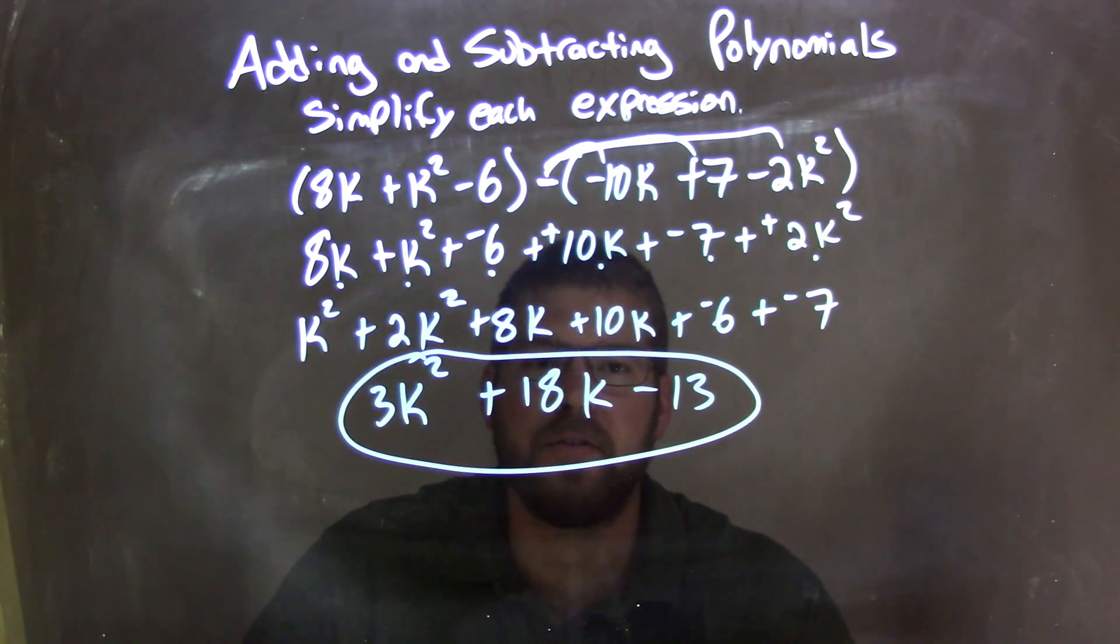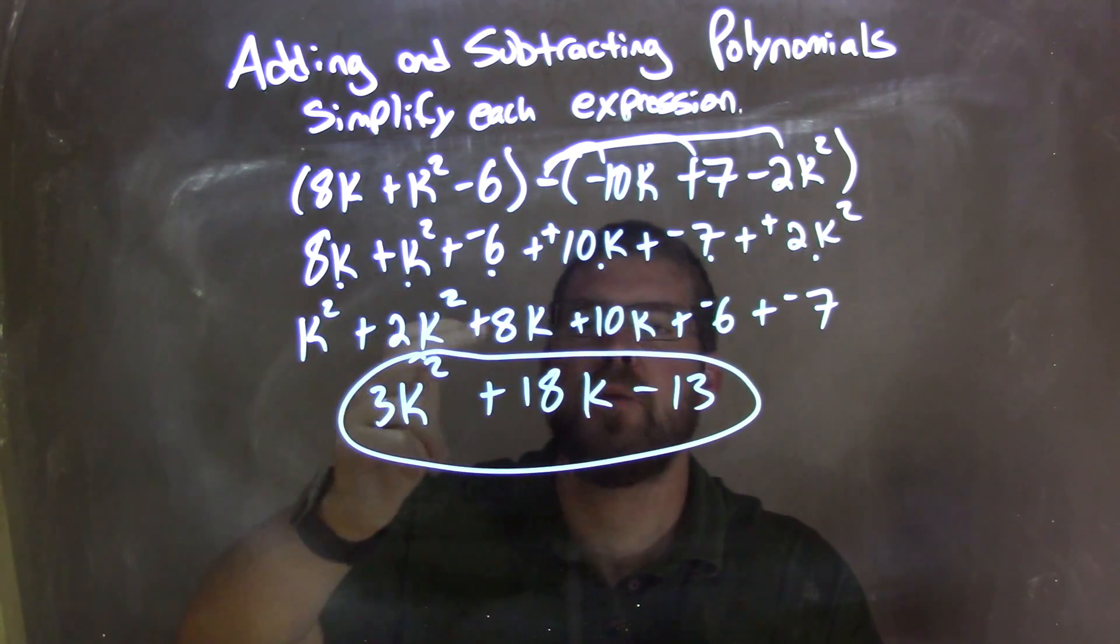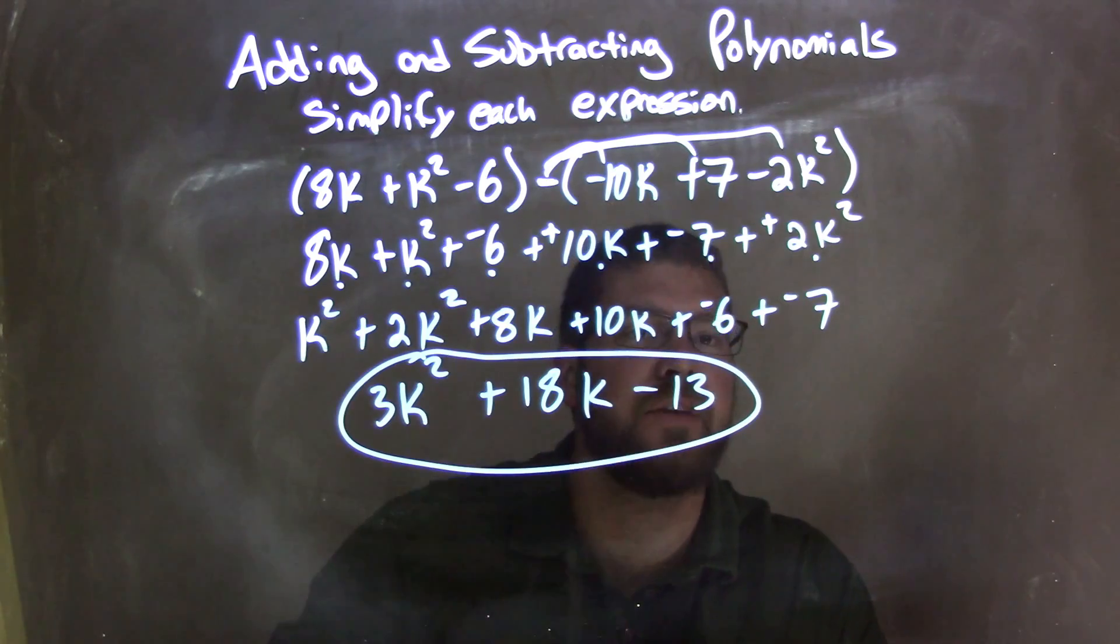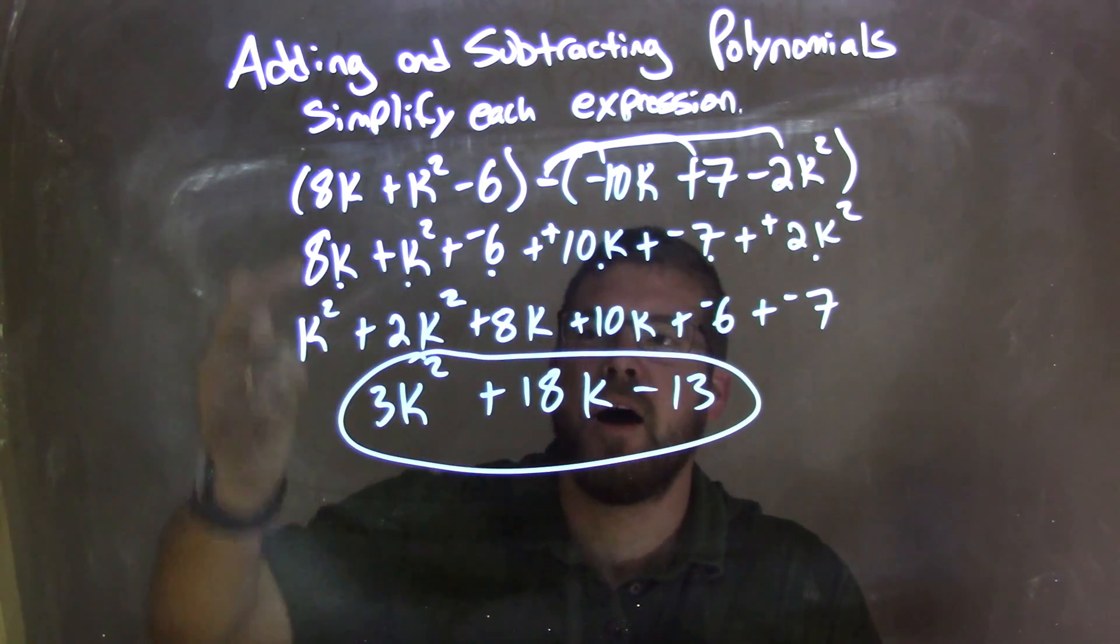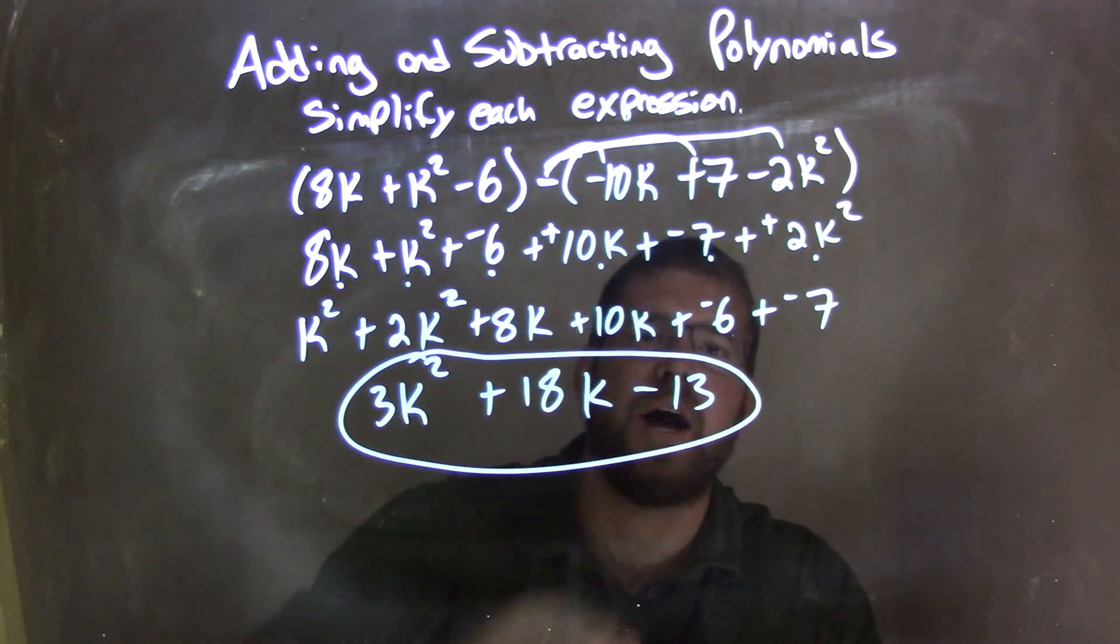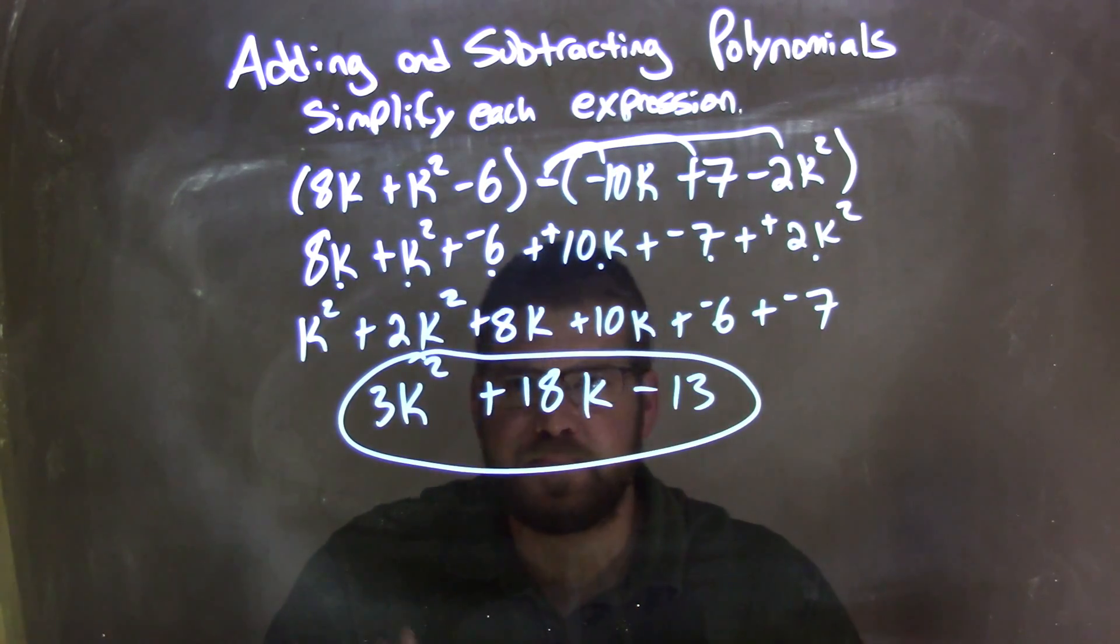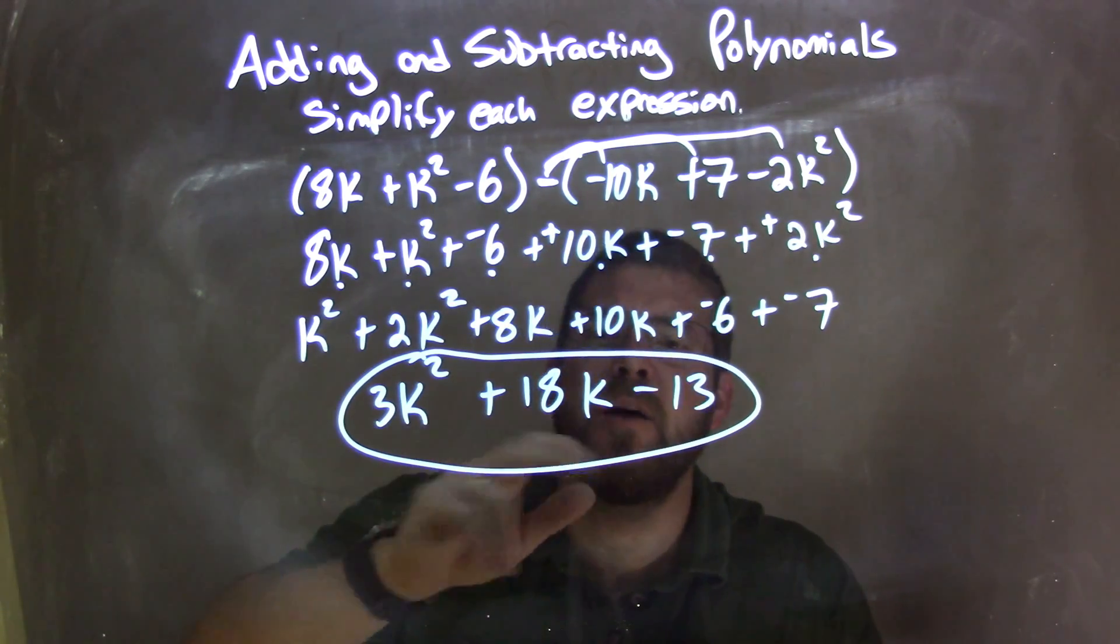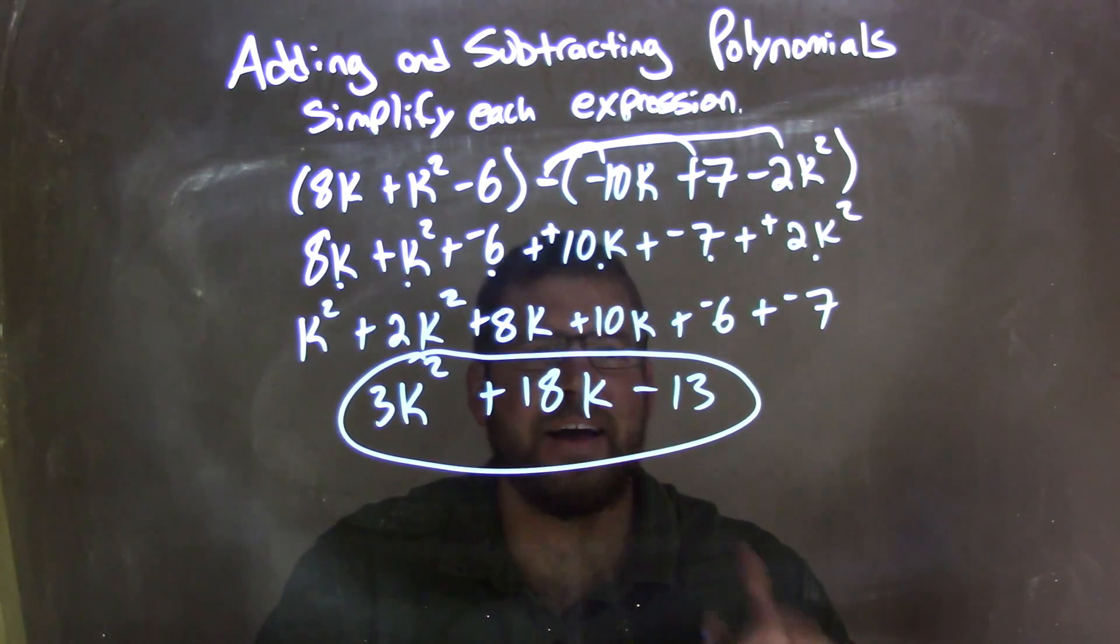Then I rewrote this using the commutative property, having my highest degrees first and my like terms together: k squared plus 2k squared plus 8k plus 10k plus a negative 6 plus a negative 7. I used a dot method when I brought it down and triple checked that everything matched up. I simplified by combining like terms, giving me 3k squared plus 18k minus 13 as my final answer.